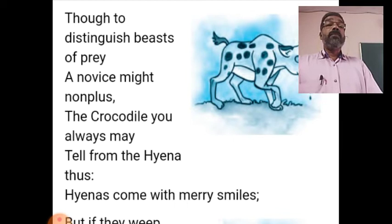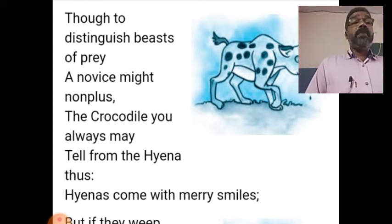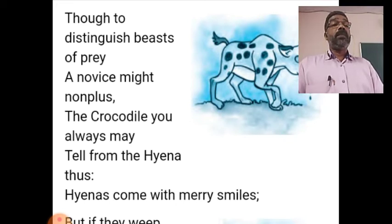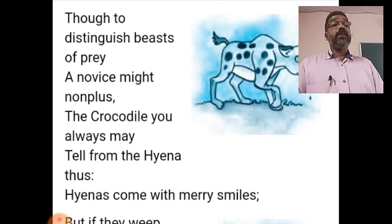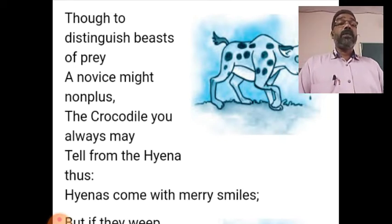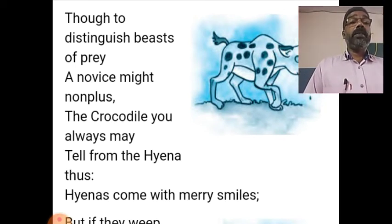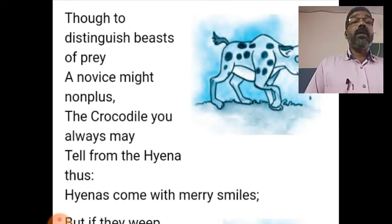Hyenas are commonly found as if they are laughing, and the crocodile is found as if it is crying — tears will be flowing from its eyes. So if you find an animal laughing, you recognize it as a hyena, and if you find an animal weeping, you recognize it as a crocodile. That is how the poet gives us the identity of a hyena and a crocodile.